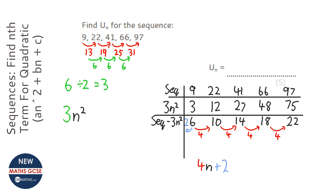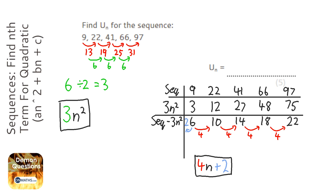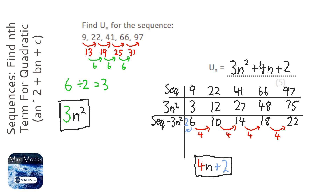So we put this bit here with this bit here, and that gives us our nth term of this quadratic sequence. So it's 3n squared plus 4n plus 2. And that's our answer. You can check this by putting in 1, 2, and 3 and seeing whether you get 9, 22, and 41, which you will do.